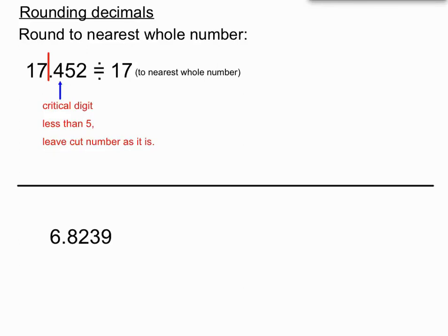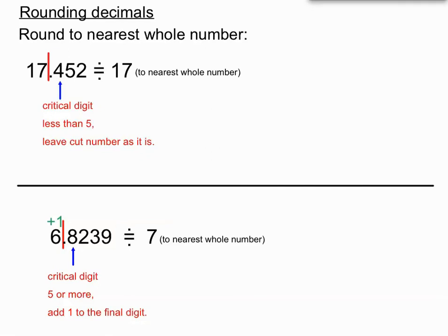No raising of the score there. But in this next example, when I chop after the whole number, the critical digit is an eight — five or more — so I add one to the final digit. The final digit is six, so adding one gives seven. The number rounded to the nearest whole number is 7.